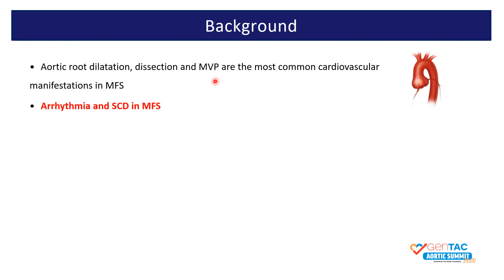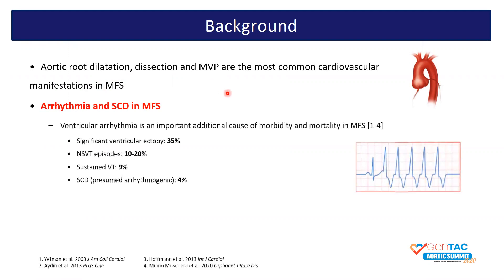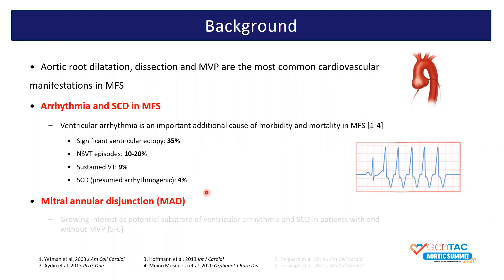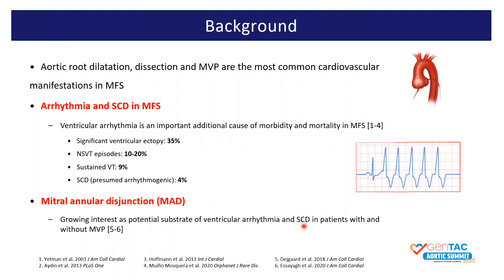Arrhythmia and sudden cardiac death are less known manifestations, but have received increasing attention as additional causes of morbidity and mortality in Marfan syndrome, as demonstrated by these numbers. In recent years, mitral annular disjunction has received growing interest as a potential substrate of ventricular arrhythmia and sudden cardiac death in patients with and without mitral valve prolapse.